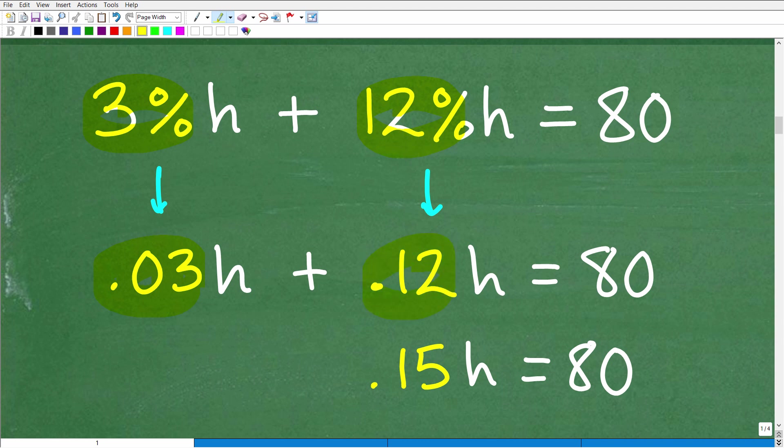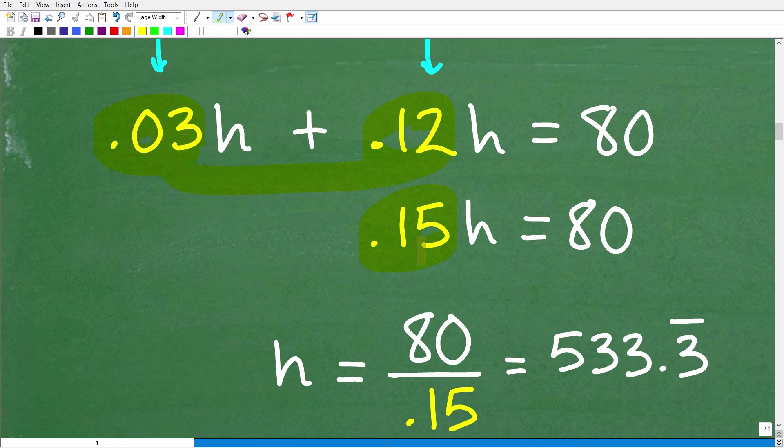So now I have basically a decimal equation. So I have like terms. So when I take that 0.03h plus 0.12h, here are my coefficients. I add those up, 0.03 plus 0.12. If you remember your basic decimals from fourth and fifth grade, that is 0.15h.